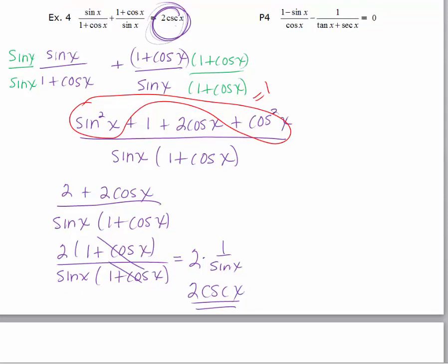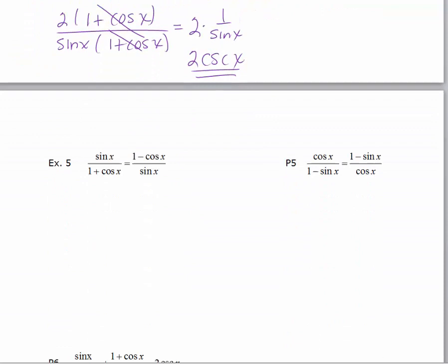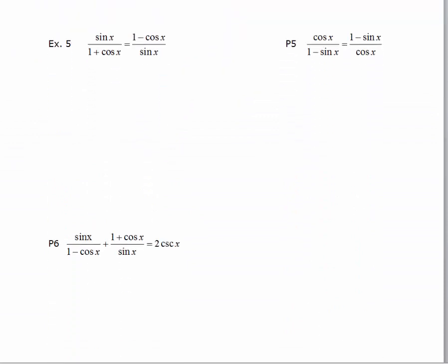I'll do one more example and then have you do the last three practice problems. So this one's a little tricky. It doesn't look super complicated. And really, deciding on which side to work with, it really doesn't matter. But whatever one you choose to work with, the trick here is to multiply the numerator and the denominator by the conjugate of that binomial.